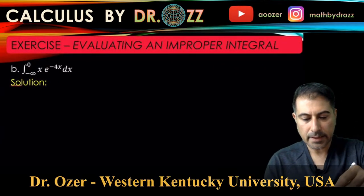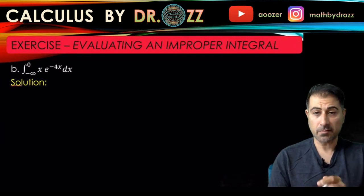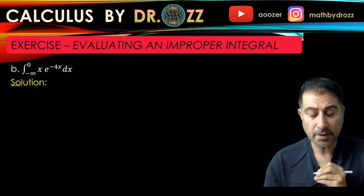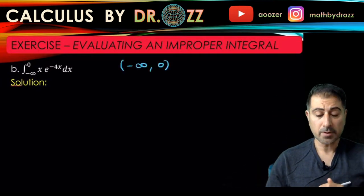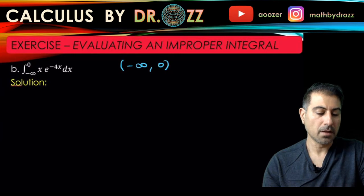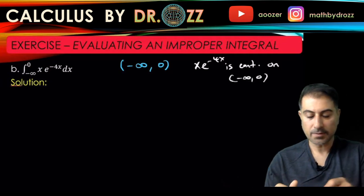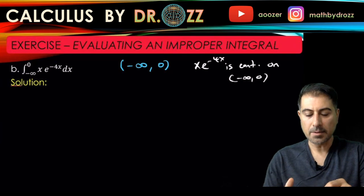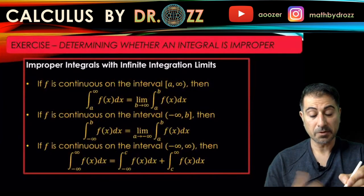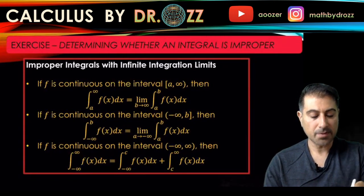Let's look at this integral. We have negative infinity appearing in one of the limits, so the interval of integration goes from negative infinity to 0. This makes the integral improper. The good news is that the function x·e^(−4x) is continuous on this interval, so this is one of the types of improper integrals. In part a we had the upper limit be infinity; now the lower limit is negative infinity.